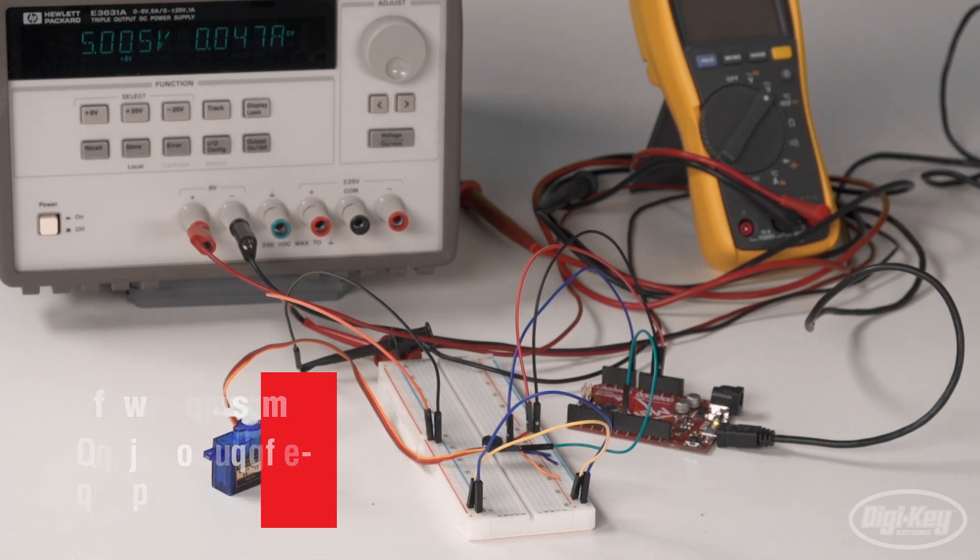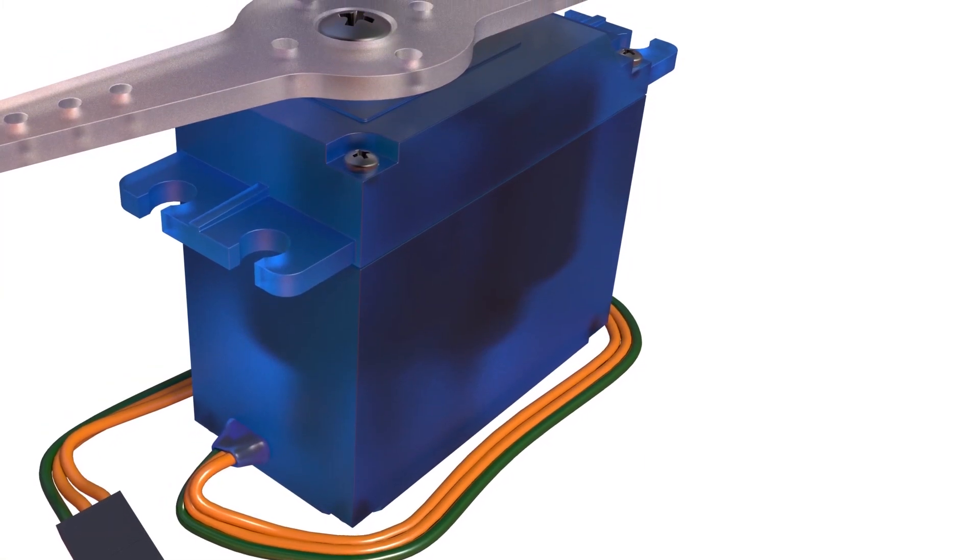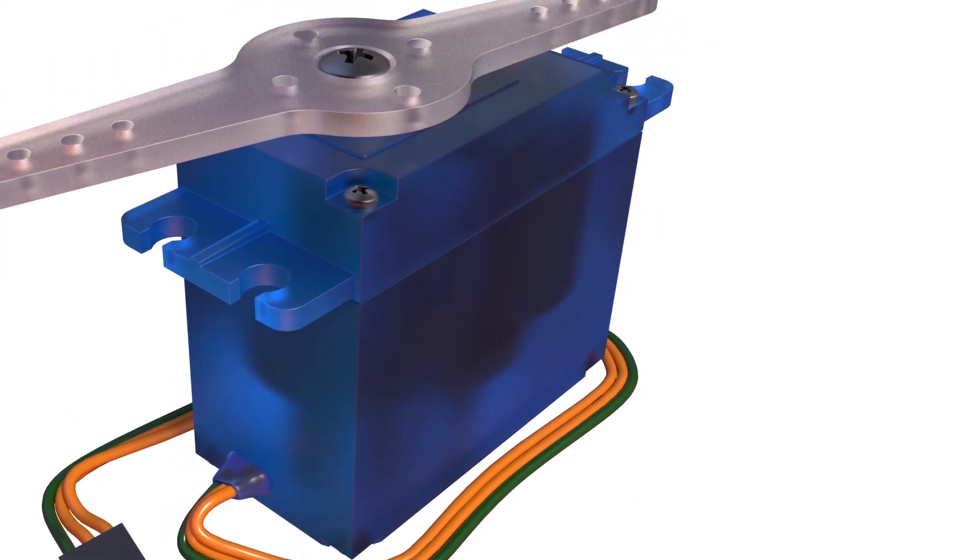The controller sends a command, and the feedback loop compares the target position or speed to the current position or speed, then adjusts accordingly.